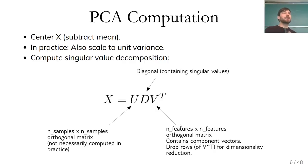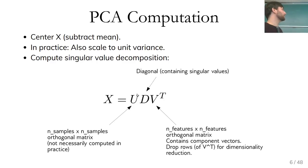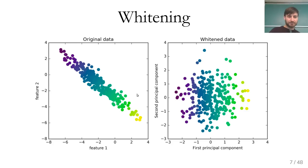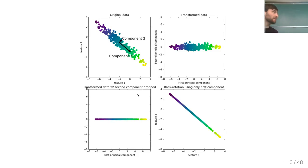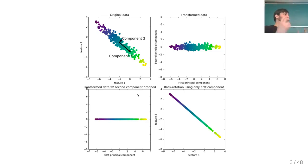If you want to look at the embedding space, U is basically X expressed in the embedding space — the first column scaled by D corresponds to the data in the embedded space. I find it most helpful to think about PCA as fitting a Gaussian and then finding the axes of the Gaussian, and then rotating so that those axes are aligned.